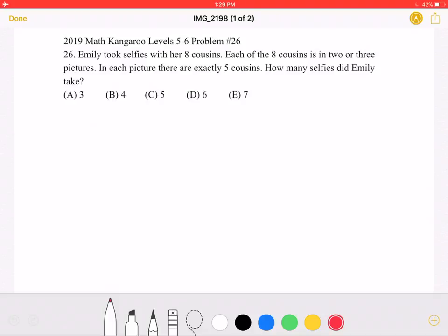So if we took photos of each cousin individually and each cousin appeared in two photos, we would have 8 times 2 photos, which would be 16 photos.